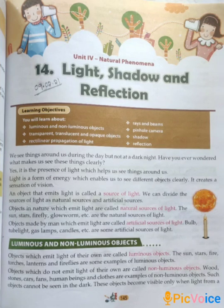We see things around us during the day but not on a dark night. So light helps us to see things around us. An object that emits light is called a source of light. It is of two types: natural sources and artificial sources.